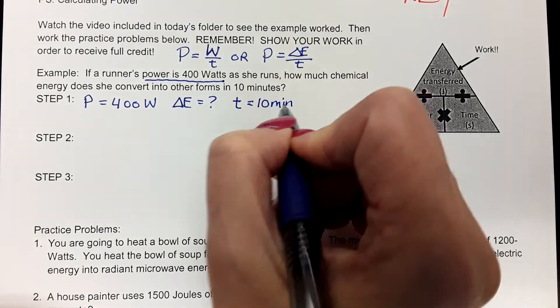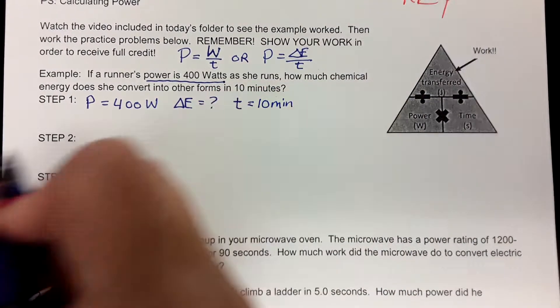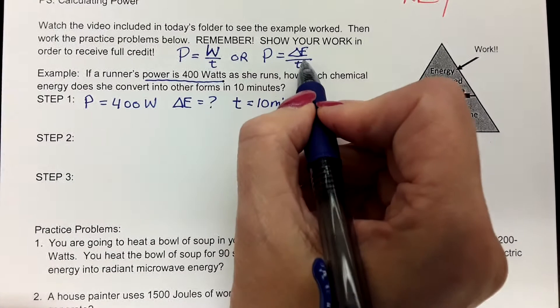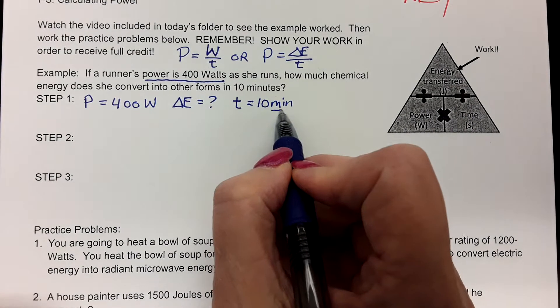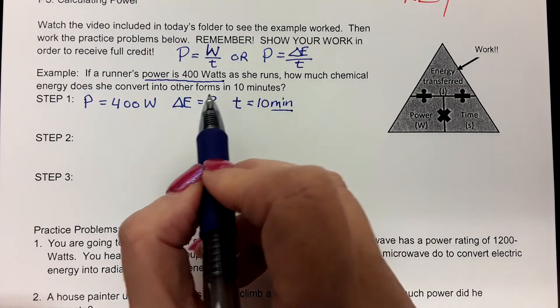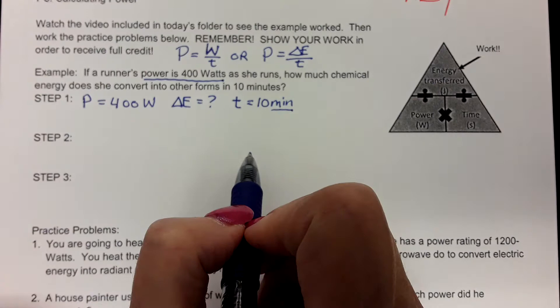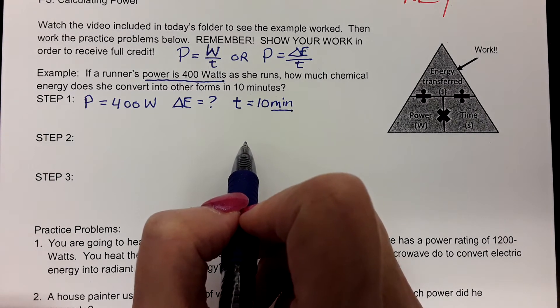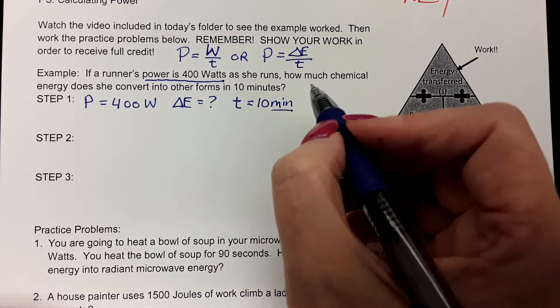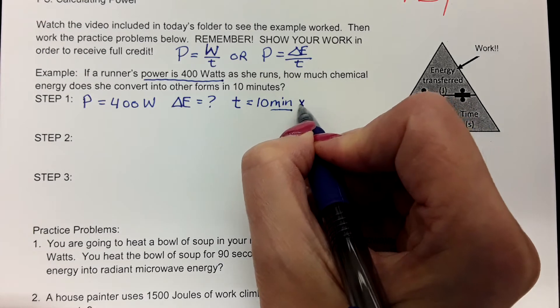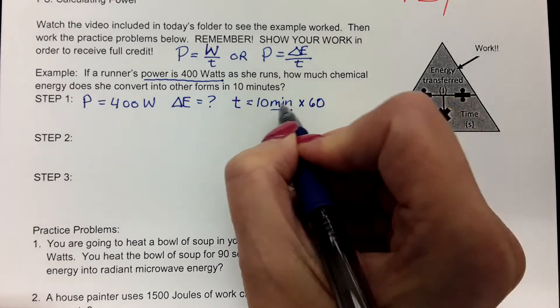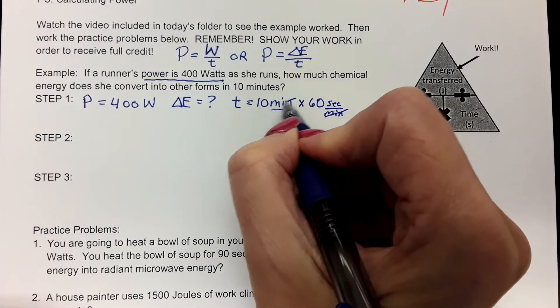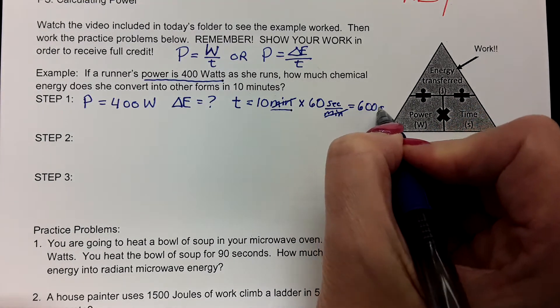Now we have a problem. If you'll remember, a watt of power is a joule per second. This is in minutes, not seconds. In order to get watts of power, our time has to be in seconds. Now, do you all remember how many seconds are in one minute? 60. So if there are 60 seconds in one minute, and you've got 10 of them, then that's going to be 600 seconds.